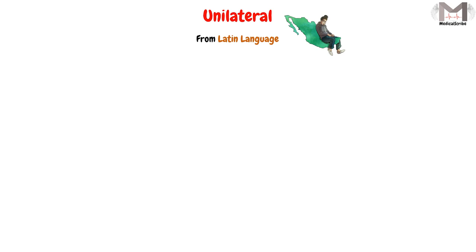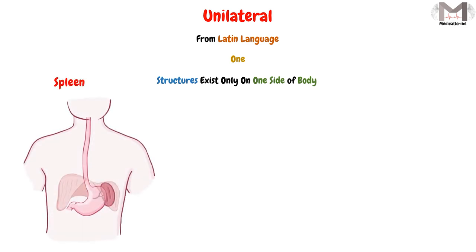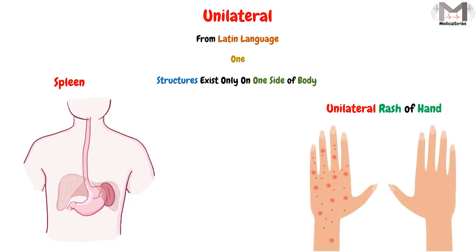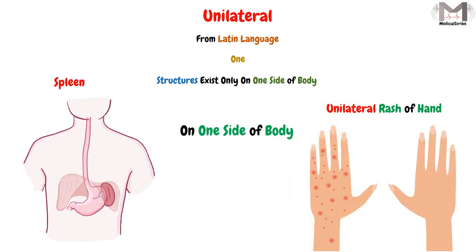Unilateral, on the other hand, is also derived from the Latin language and means one. It describes structures that exist only on one side of the body, like the spleen. Because we have only one spleen on the left side of our body. And if we say unilateral rash of the hand, that means there is a rash in one hand of the body while the other one is normal. So unilateral means on one side of the body.